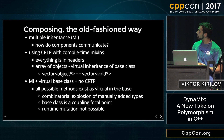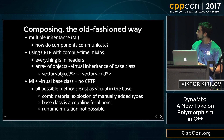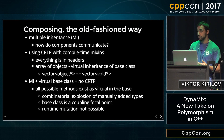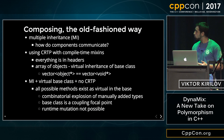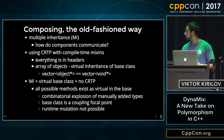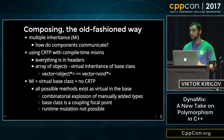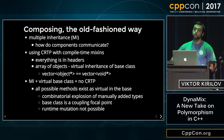If we use multiple inheritance with virtual base classes and no CRTP, and all possible methods are in the base class as virtual, then there's a combinatorial explosion of manually added types. The base class becomes a coupling focal point with a huge interface, and also we can't modify objects at runtime — we can't remove and add components.